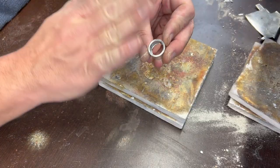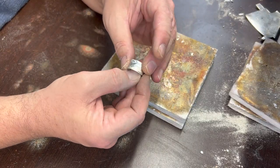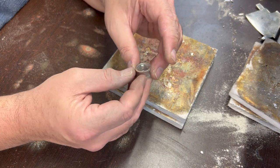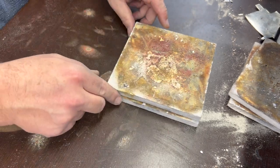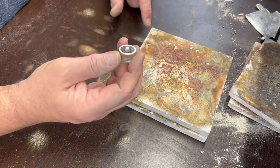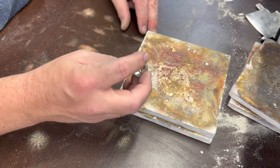All right, did a bit of cleanup with the Dremel and with the file and everything, and I think I got it shaped pretty well. So the next thing that I'm going to do is I'm going to heat it up just a bit and throw it in my pickle jar. Pickle for a bit, and then I'll polish it up and show you what it looks like.